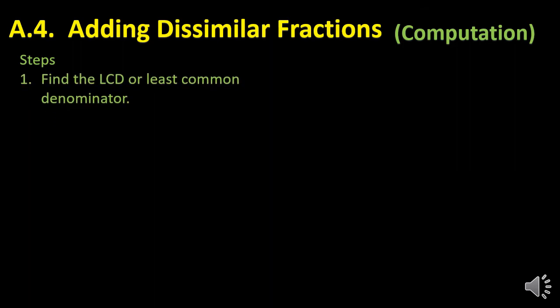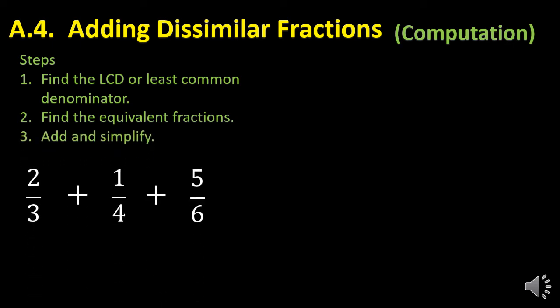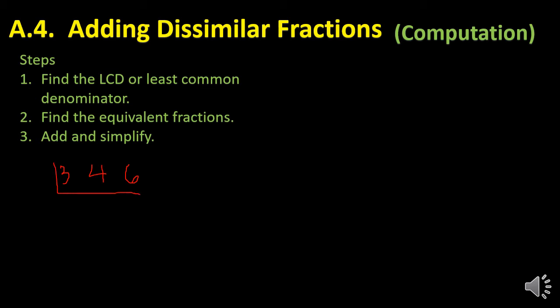Let's review the steps in adding dissimilar fractions: find the LCD, find equivalent fractions, and add and simplify. Say for instance I have three fractions: two thirds, one fourth, and five over six. To get the LCD of three, four, and six, I write the numbers three, four, and six. Using the decomposition method, I look for a number that can divide at least two of them. There's no number that divides three and four except one, but two divides both four and six: four divided by two is two, and six divided by two is three.